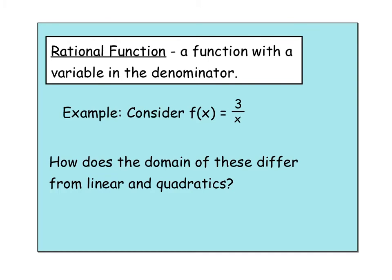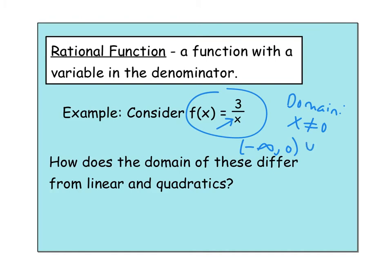So if we see a function like 3 over x, if x equals zero, that gives us an undefined expression. So the domain of this function: x cannot equal zero because that would cause us to be dividing by zero. The way we write that domain — all numbers except zero — the simplest way is x cannot equal zero. As an interval, it would be negative infinity to zero (not including zero), union, zero to infinity (not including zero). That's saying everything from negative infinity to zero and then starting again past zero to infinity.